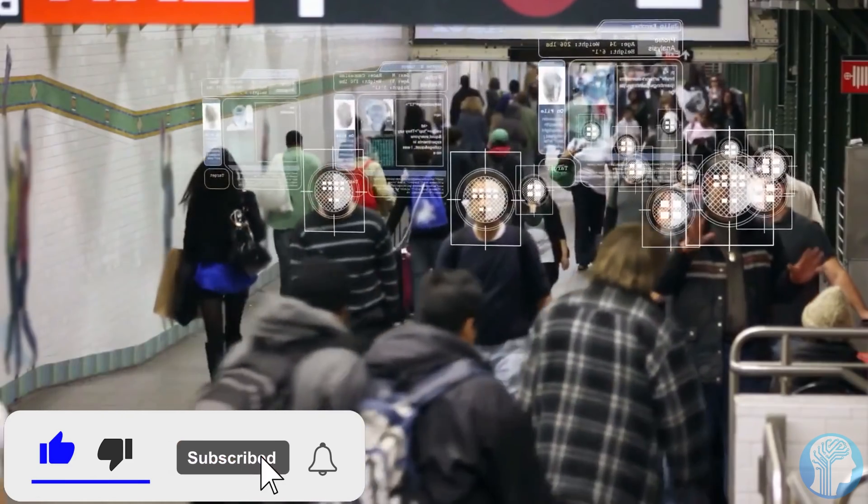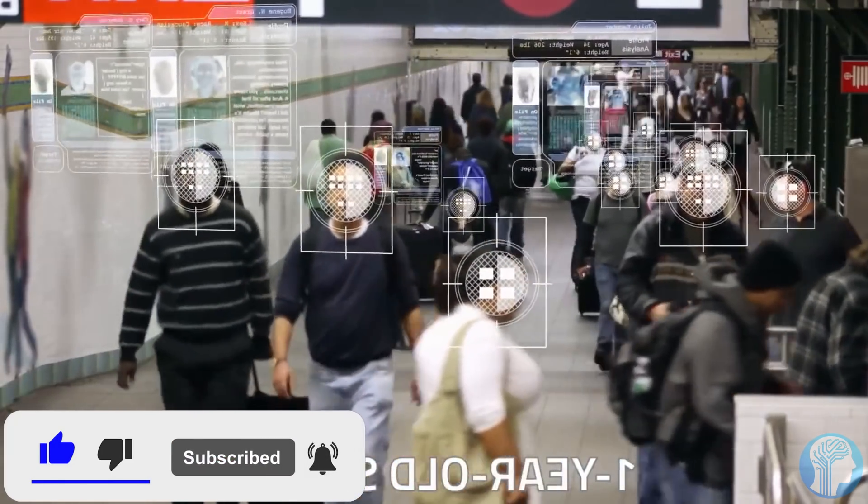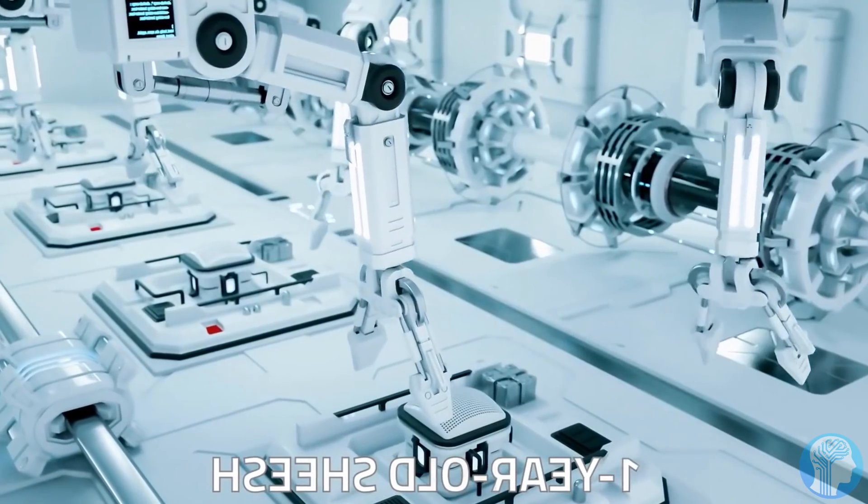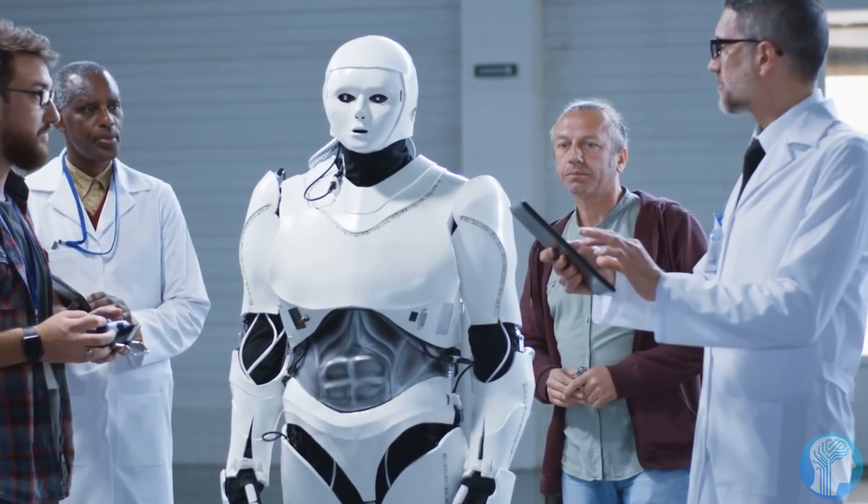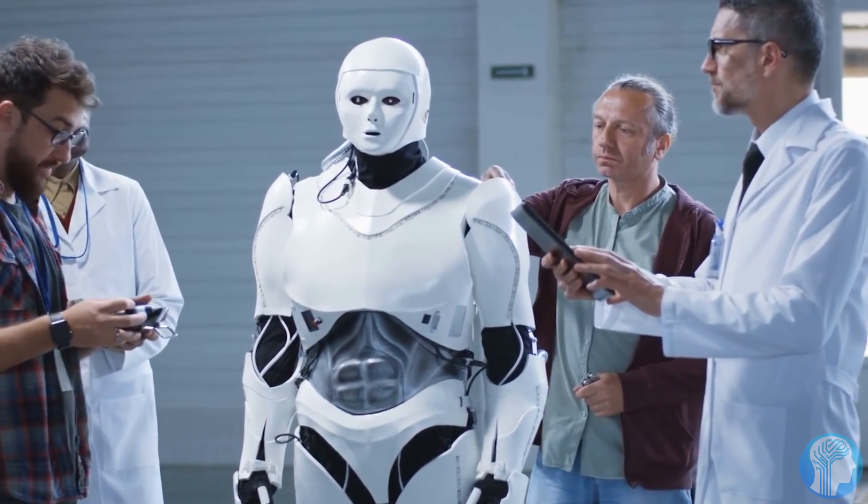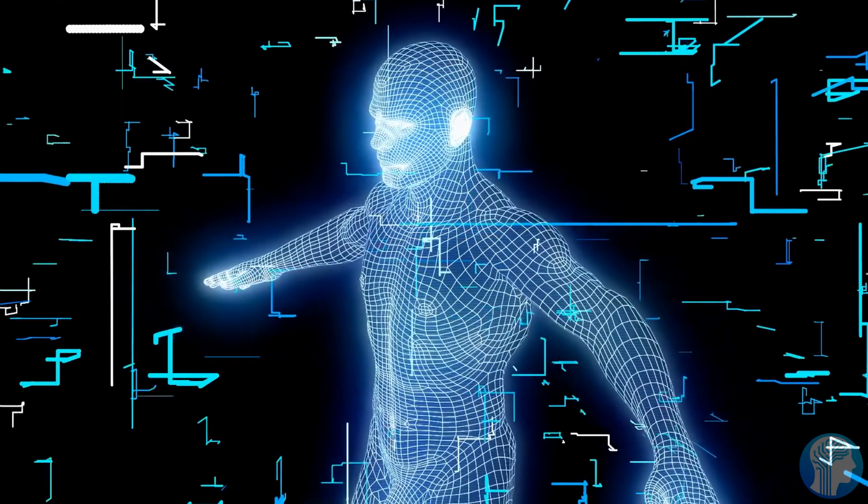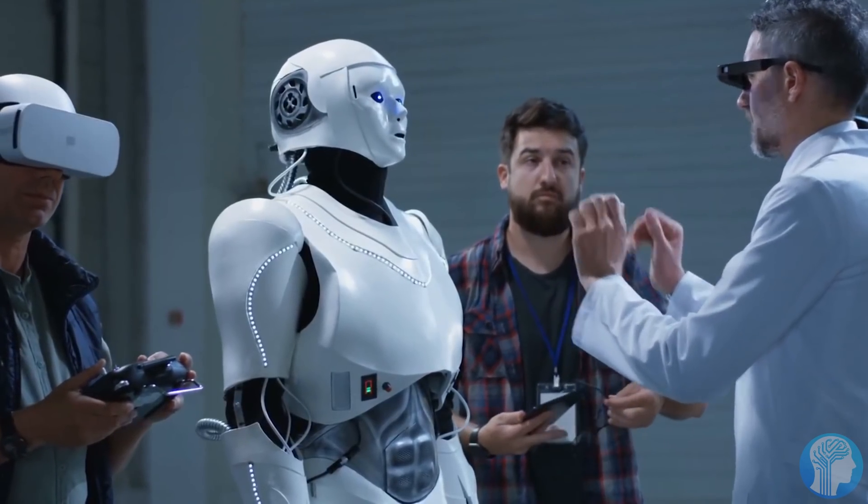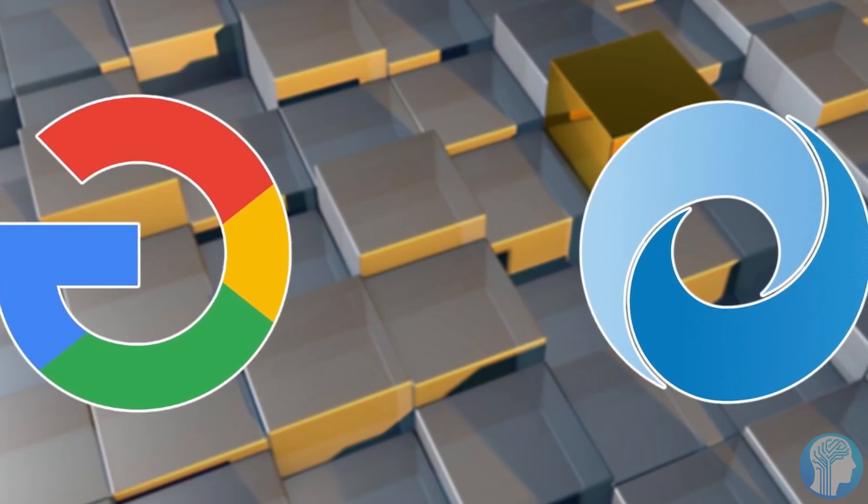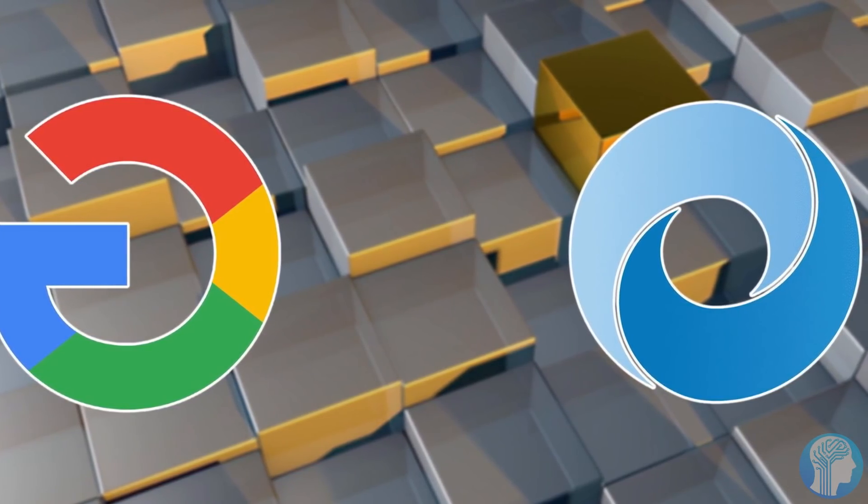Scientists have investigated two potential approaches to controlling a super intelligent AI. On the one hand, super intelligent AI's capabilities could be specifically limited, for example, by isolating it from the internet and all other technical devices so it has no contact with the outside world. But this would render the super intelligent AI significantly less powerful, less able to answer humanity's quests.